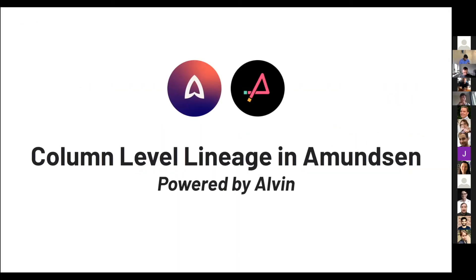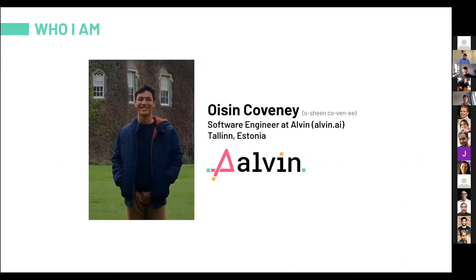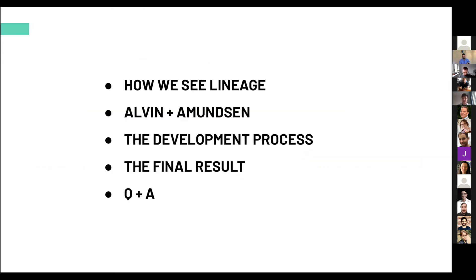My name is Oshini Kovani. We're going to be talking about how we got column-level data lineage in Amundsen using our tool, Alvin. I'll skip the intro slide since I already talked about myself. I'm going to talk about how Alvin sees lineage, then how we integrate with Amundsen, then the development process of developing a transformer and adding column lineage, and then we'll show the final results and take questions.